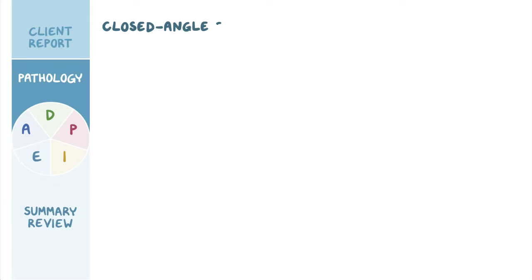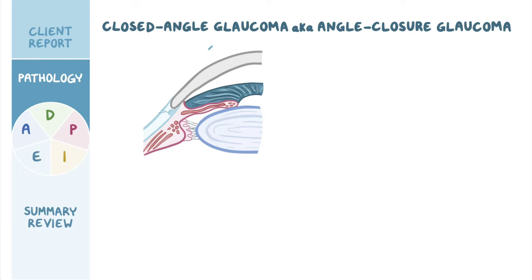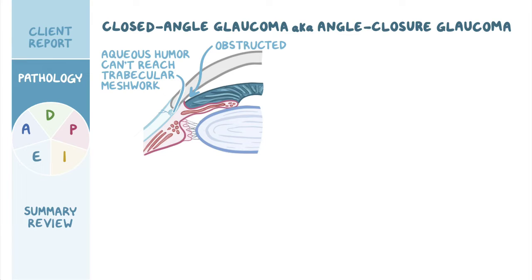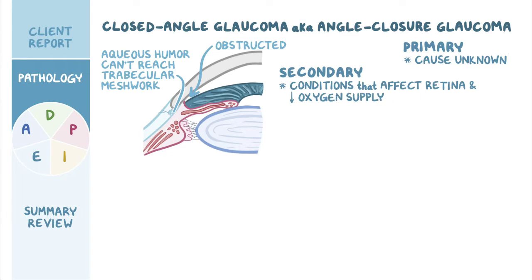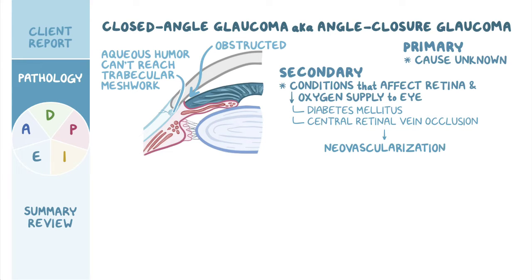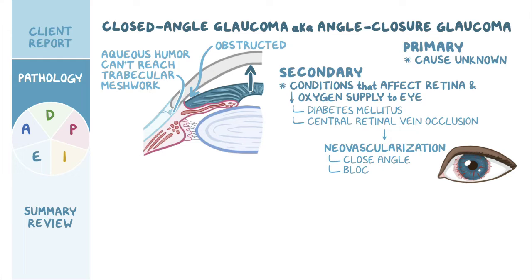In closed angle glaucoma, also known as angle closure glaucoma, the angle between the cornea and the iris is obstructed, so the aqueous humor can't reach the trabecular meshwork. Closed angle glaucoma can be primary or secondary. Secondary cases are typically caused by conditions that affect the retina and decrease oxygen supply to the eye, like diabetes mellitus or central retinal vein occlusion. This lack of oxygen triggers neovascularization, or the formation of new blood vessels, some of which can grow into the iris and push it forward, subsequently closing the angle and blocking the outflow.